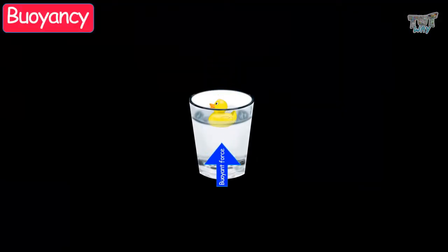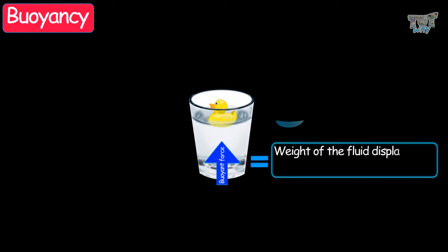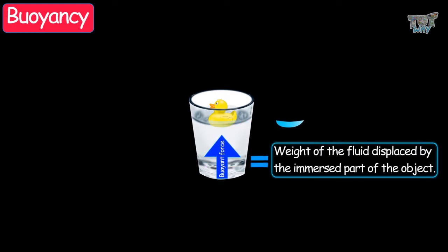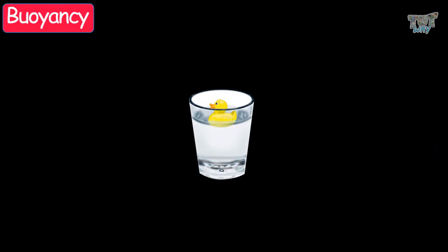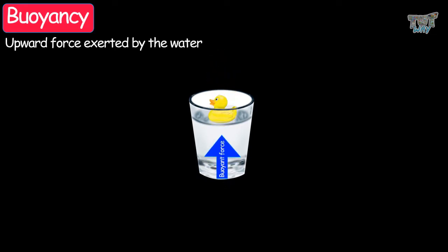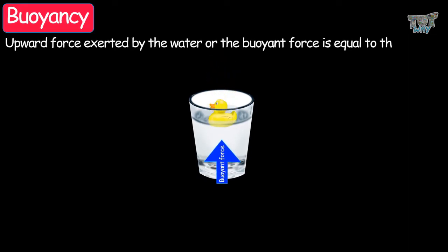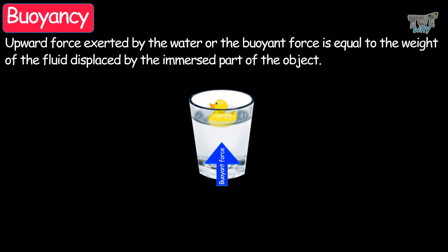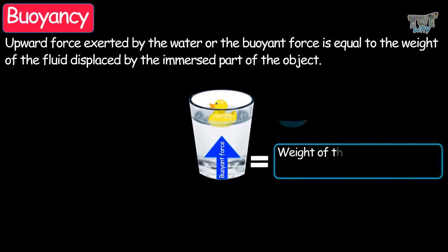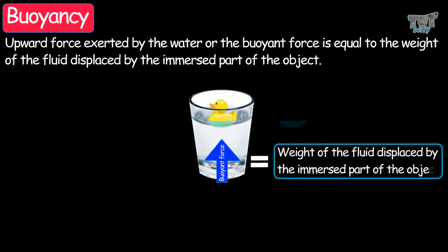The buoyant force experienced by an object is equal to the weight of the fluid displaced by the immersed part of the object. The upward force exerted by the water — the buoyant force — is equal to the weight of the fluid displaced by the immersed part of the object.